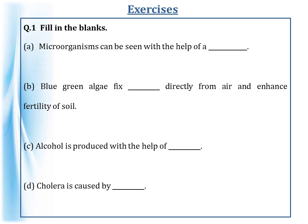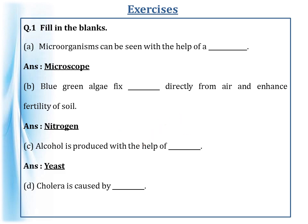The first question is fill in the blanks. Microorganisms can be seen with the help of a microscope. Blue-green algae, also called as cyanobacteria, fixes nitrogen directly from the air and enhances the fertility of soil. Alcohol is produced with the help of yeast. Yeast is a type of fungi. Cholera is caused by bacteria.